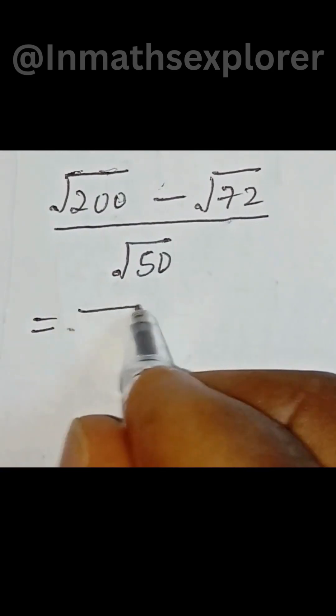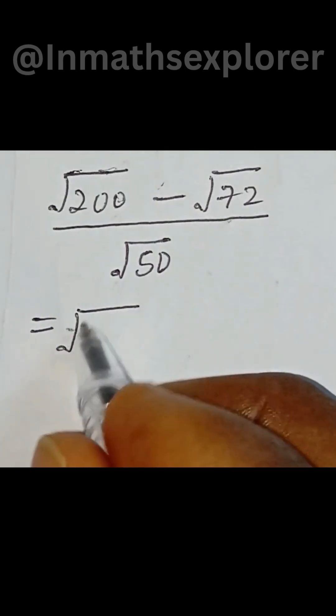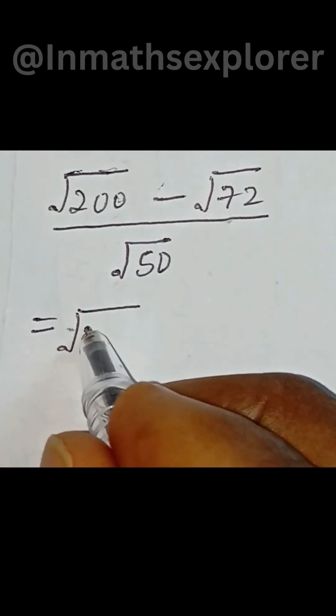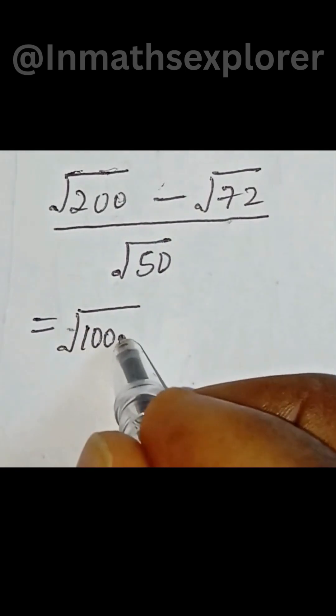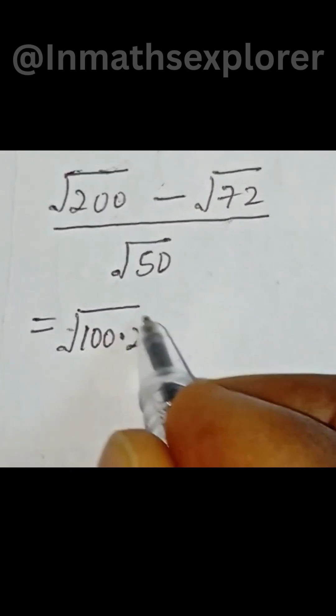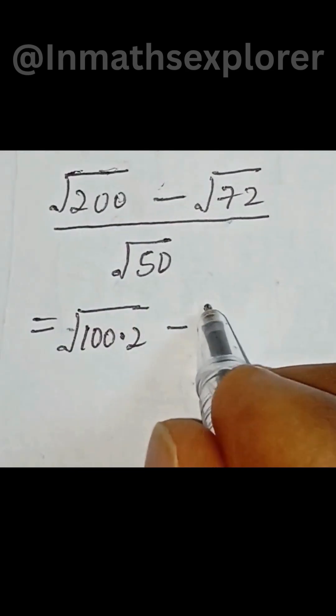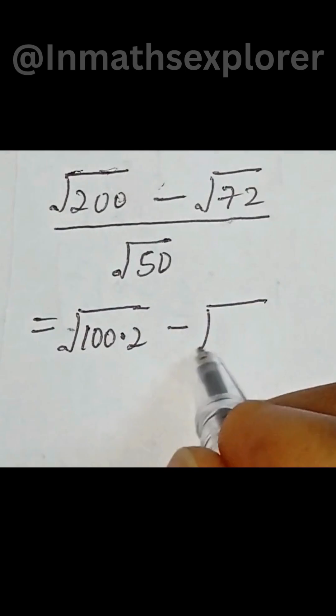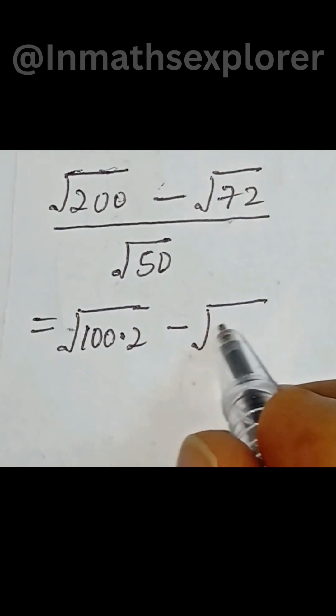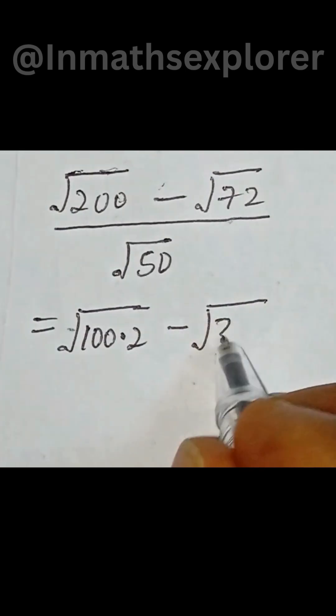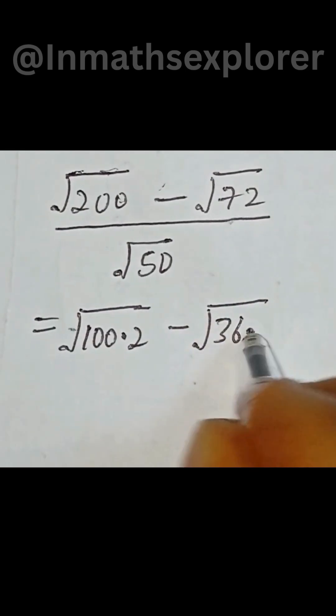Simplifying this, we have square root of 200 written as square root of 100 multiplied by 2, minus square root of 72 simplified as square root of 36 multiplied by 2.